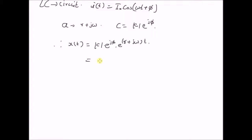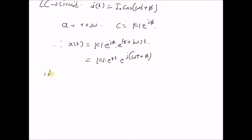This can be rewritten as the modulus of c times e^(rt) — the amplitude component that changes with time — multiplied by e^(j(ωt + φ)), where ωt represents the sinusoid component and φ is the initial phase. In this case, there are two possibilities: for r less than 0, the signal x(t) is basically a damped sinusoid.